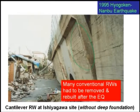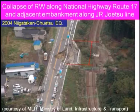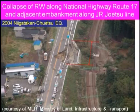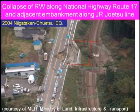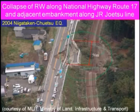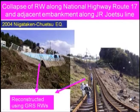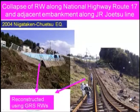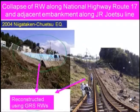This cantilever retaining wall is without any deep foundation. Second is the collapse of the retaining wall along National Highway Route 17 and the adjacent embankment along the Jetsu line due to the 2004 Niigata earthquake. The damaged section was approximately 56 meters. It was then reconstructed using a GRS (geosynthetically reinforced soil) retaining wall, showing both the collapse and the reconstruction process.